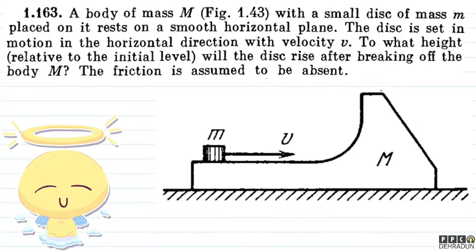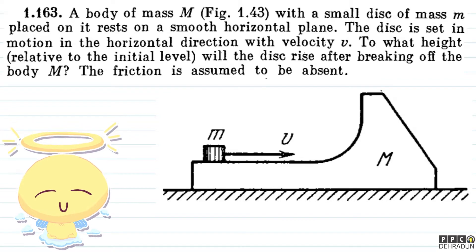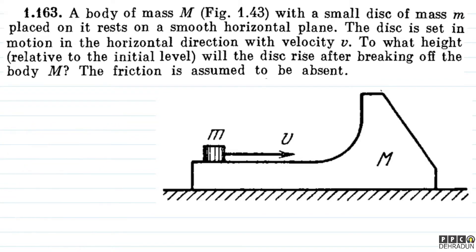Welcome students, let's have a look at this beautiful problem from Irodov. The question says: a body of mass M with a small disc of mass m placed on it rests on a smooth horizontal plane. The disc is set in motion in the horizontal direction with velocity v. To what height relative to the initial level will the disc rise after breaking off the body M? The friction is assumed to be absent.